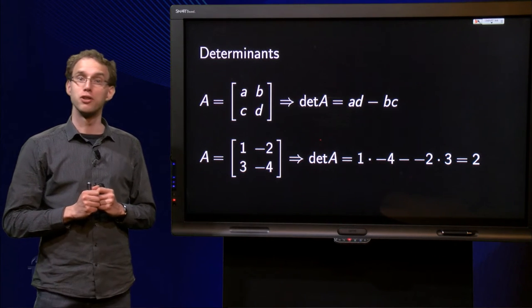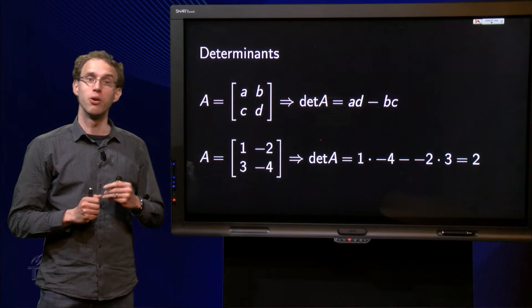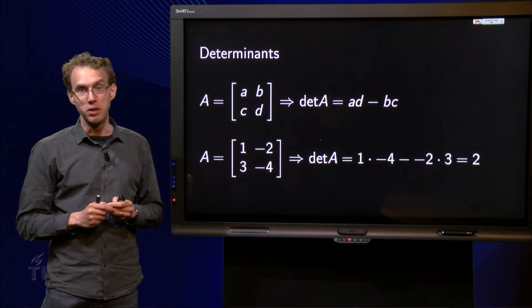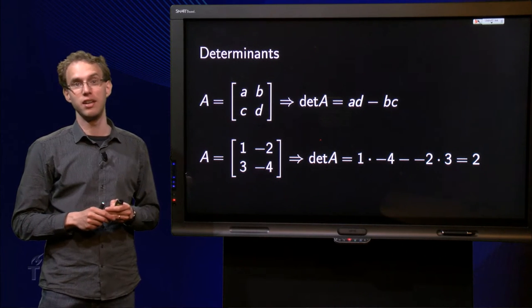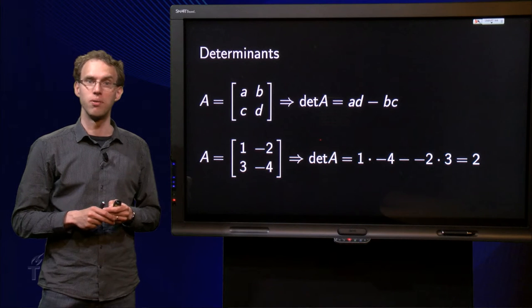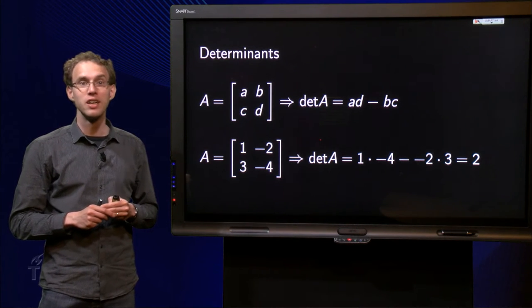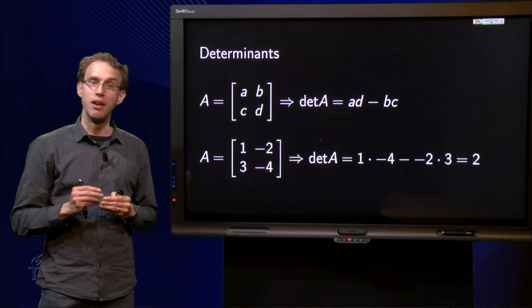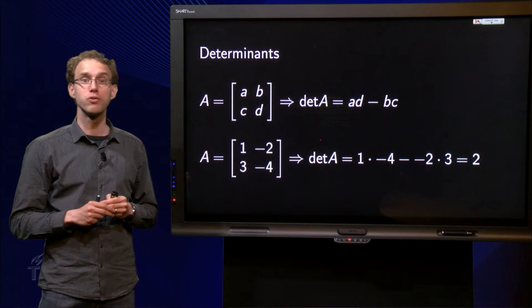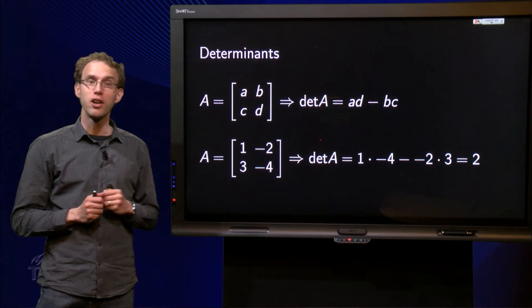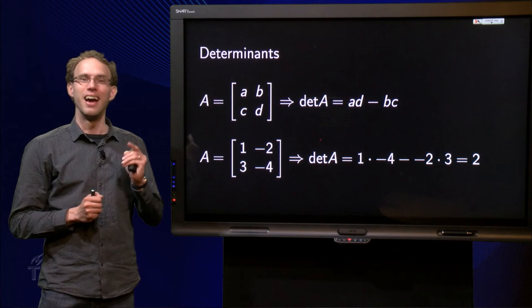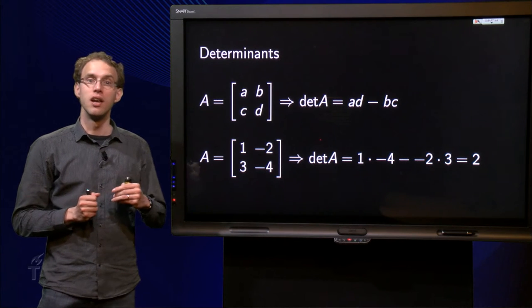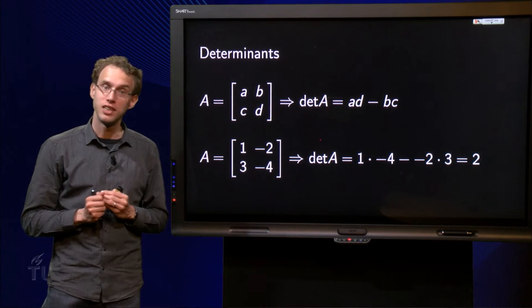When we were looking into the inverse of a 2×2 matrix, we already encountered the determinant of a matrix. We noticed that the 2×2 matrix was invertible if and only if the determinant was non-zero. You may have already wondered whether it is possible to compute determinants for larger matrices, and whether the same rule holds for larger matrices. The answer to both questions is yes. In this web lecture, you will learn how to compute determinants of larger matrices. Later on, you will see the relation with invertibility.